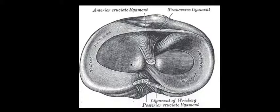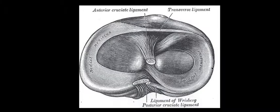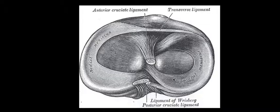On the other side we have the lateral meniscus, which is a little bit smaller. This one is actually more C-shaped — it doesn't have the variation in width that we notice on the medial meniscus, and it almost comes back to a full circle. That's also going to be important when we're looking for any pathology in that area.